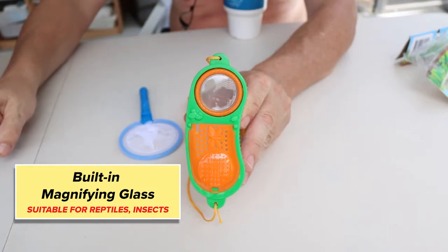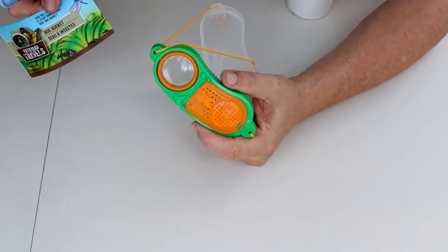It has a magnifying glass right on the lid. It comes with a piece of paper that tells you what it is.